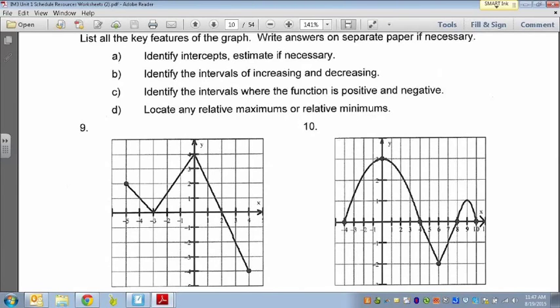So first thing, part A says intercepts. So intercept right here at negative 4 comma 0. Intercept, the y-intercept is here at 0 comma 3. Another intercept right here at 4 comma 0. And another one here at 8 comma 0, as well as 10 comma 0. So those are all my intercepts, the places where it crosses the x and y-axis.